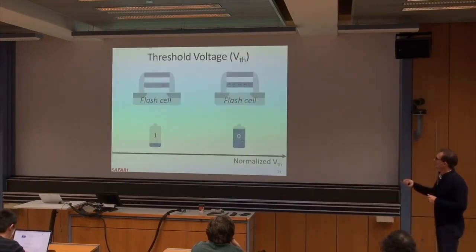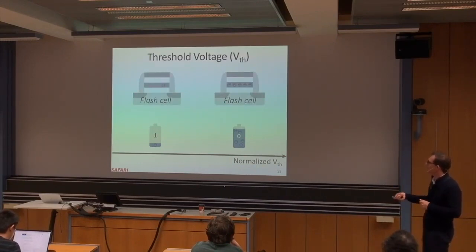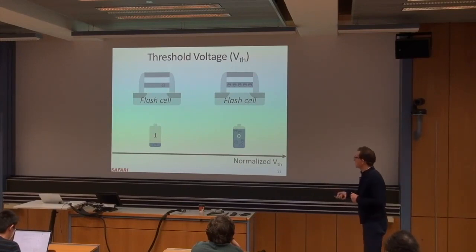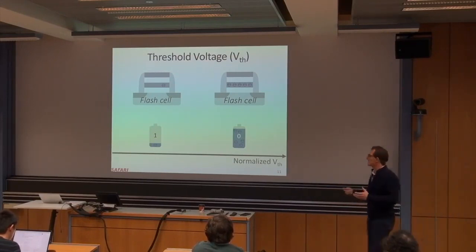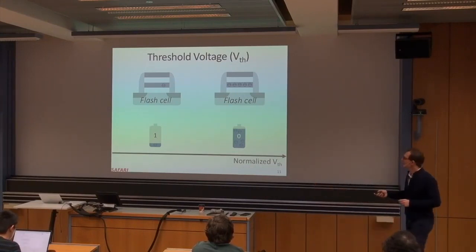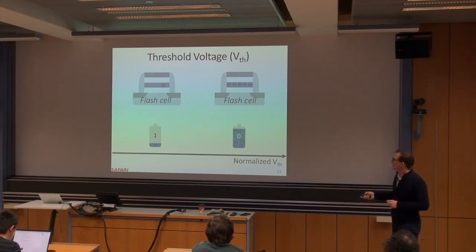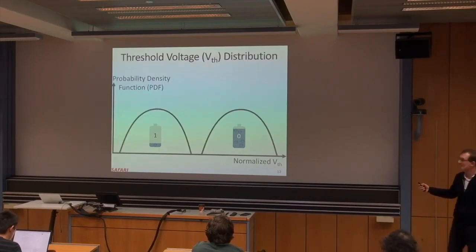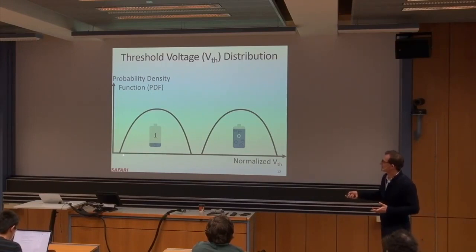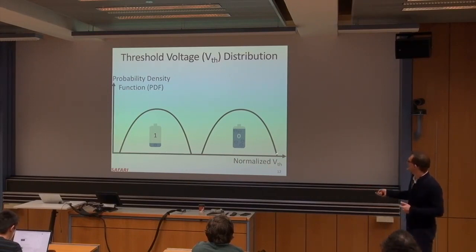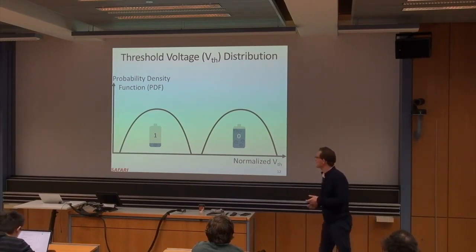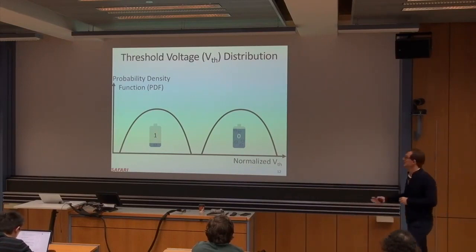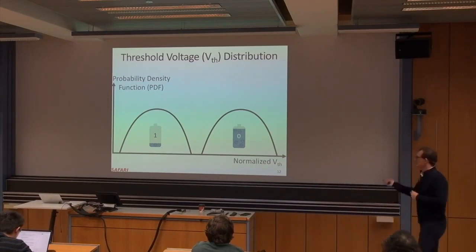Back to threshold voltage: you have a read reference voltage that delineates a '1' from a '0'. Programming cannot be extremely precise, so there's variation. Whenever you program cells, their threshold voltages won't be exact — you get a distribution across flash cells. Some programmed to '1' have slightly different threshold voltages than others, and similarly for '0'. This is due to program variation, a factor of process variation, precision of programming equipment, and many other cell-level factors.